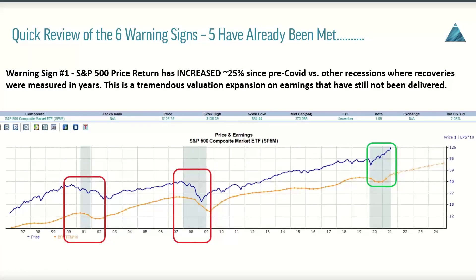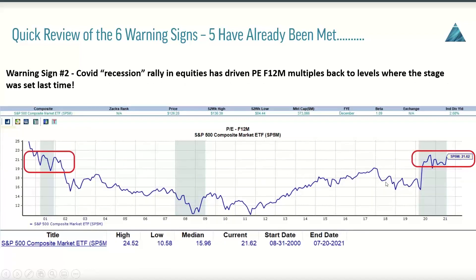Last week we talked about the six warning signs, five of which have already been met. Warning sign number one was the S&P 500 price return increasing 25% since pre-COVID — the multiple expansion looks strikingly similar to what we had pre-dot-com. Other recessions had recoveries measured in years; COVID's was measured in months. That's a tremendous valuation expansion on earnings that really still haven't been delivered, so there's a bit of risk there. Warning sign number two was the COVID recession rally driving the PEF-12M multiple back to levels where the stage was set last time during the dot-com era.